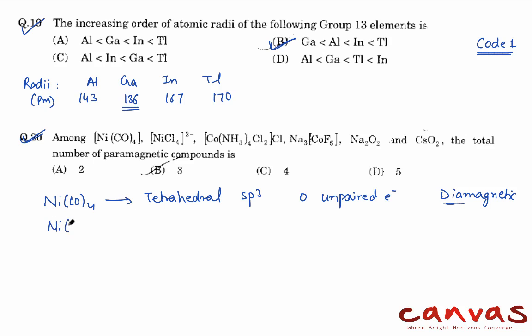Then we have NiCl4 2-. Now it is again tetrahedral, sp3, it has two unpaired electrons. So it is paramagnetic.